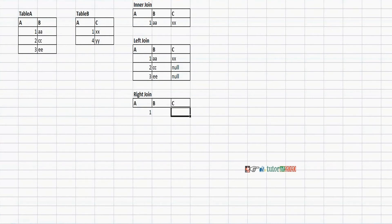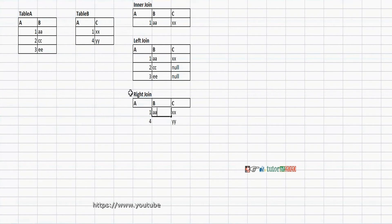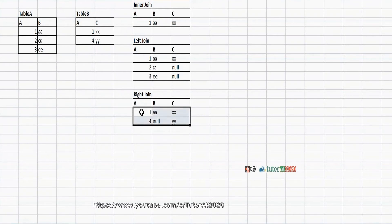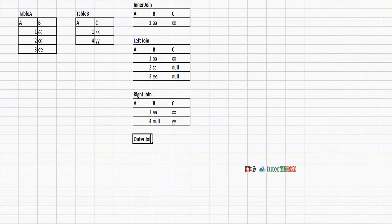Right join means all the records from the right side table and only matching records from the left side. For record 1 there is a matching condition; for record 4 there is no matching condition. Auto join is a combination of left and right join.